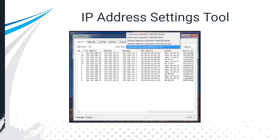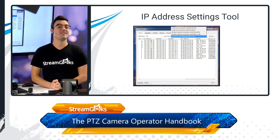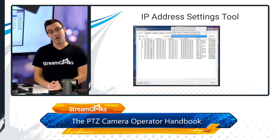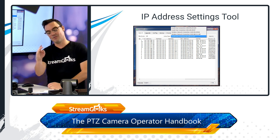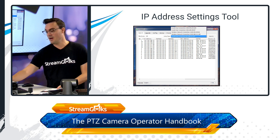There are tools for searching your network for PTZ cameras. If a camera is on your network and you're not sure of its IP address, you can use an IP address settings tool from the camera manufacturer to search the network, find the camera, and set a static IP address. You can also use the IR remote control to set the camera to DHCP to automatically receive an IP address from the router, or use the software that comes with your camera.